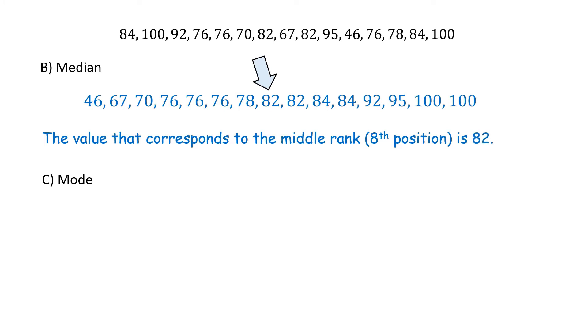Part C, find the mode. Mode is the data value that occurs the most and the data value that occurs the most is 76.